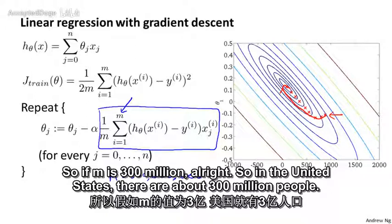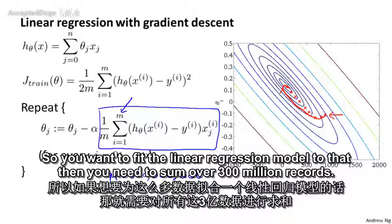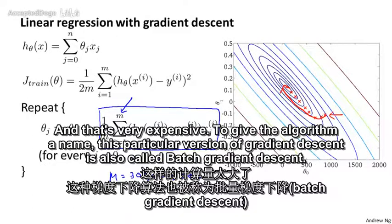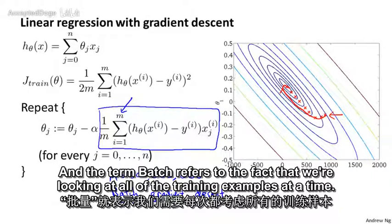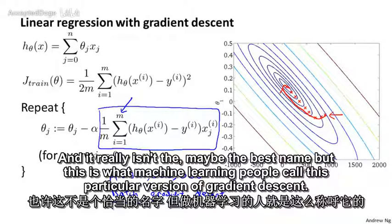In the United States there are about 300 million people, and so US census data may have on the order of that many records. If you want to fit a linear regression model to that, you need to sum over 300 million records, and that's very expensive. To give the algorithm a name, this particular version of gradient descent is also called batch gradient descent, where the term batch refers to the fact that we're looking at all of the training examples at a time.